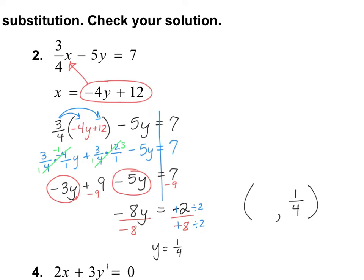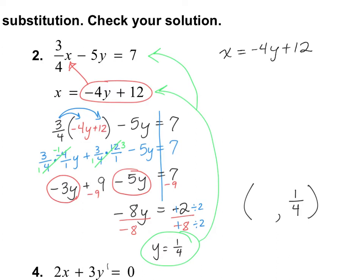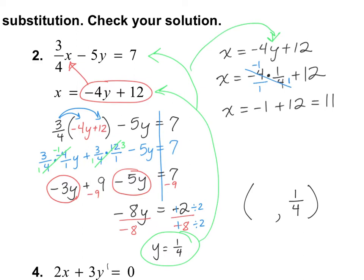Now I know part of my answer: y equals positive one-fourth. I just need to find x. I'll use the equation already solved for x: x equals negative 4y plus 12. Substituting y equals one-fourth gives x equals negative 4 multiplied by one-fourth plus 12. Making negative 4 a fraction, it simplifies to negative 1, so x equals negative 1 plus 12, which equals 11. So x is 11, and that goes in the answer box. There we have our answer.